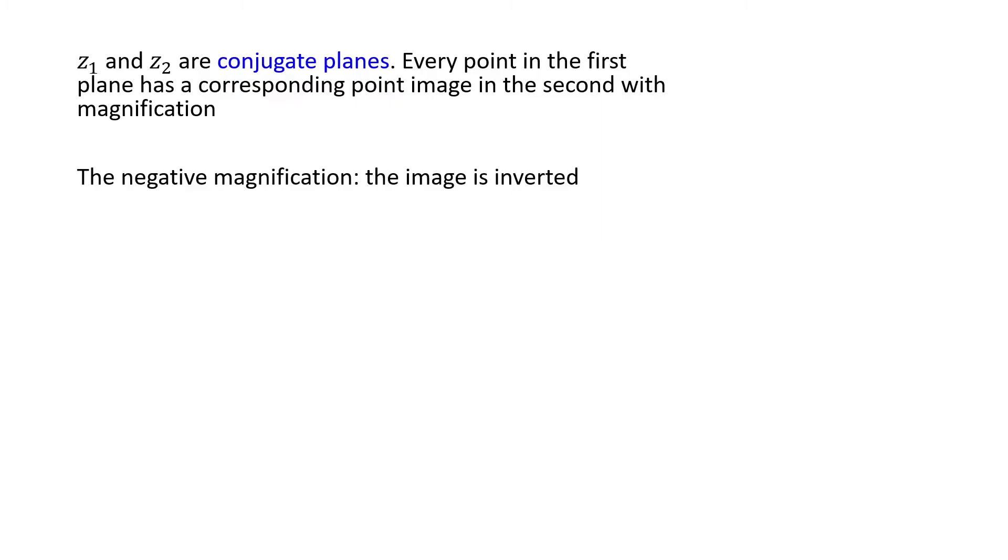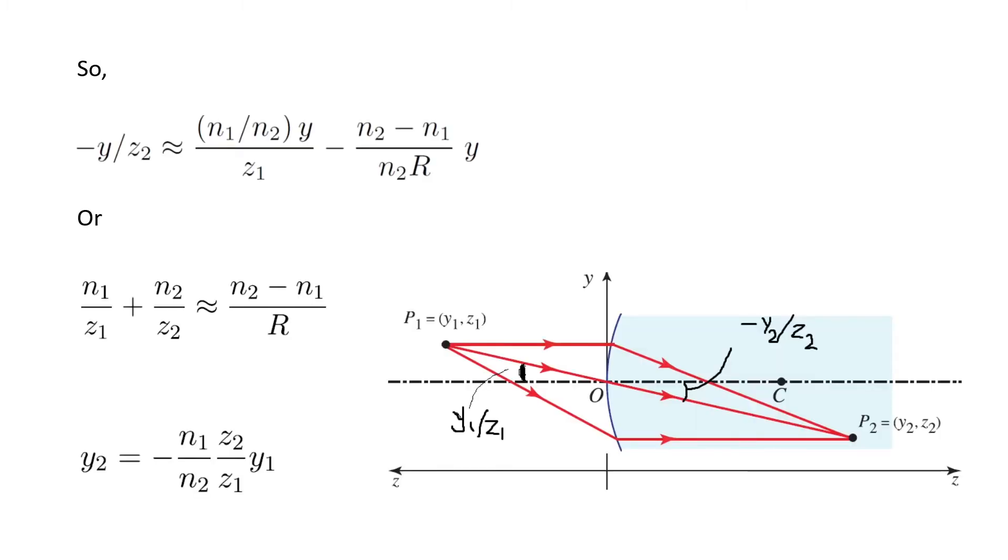So if I come back to the previous slide, this means that z1 and z2 are both positive. But if point P2 is located on the left side, then z2 is negative.